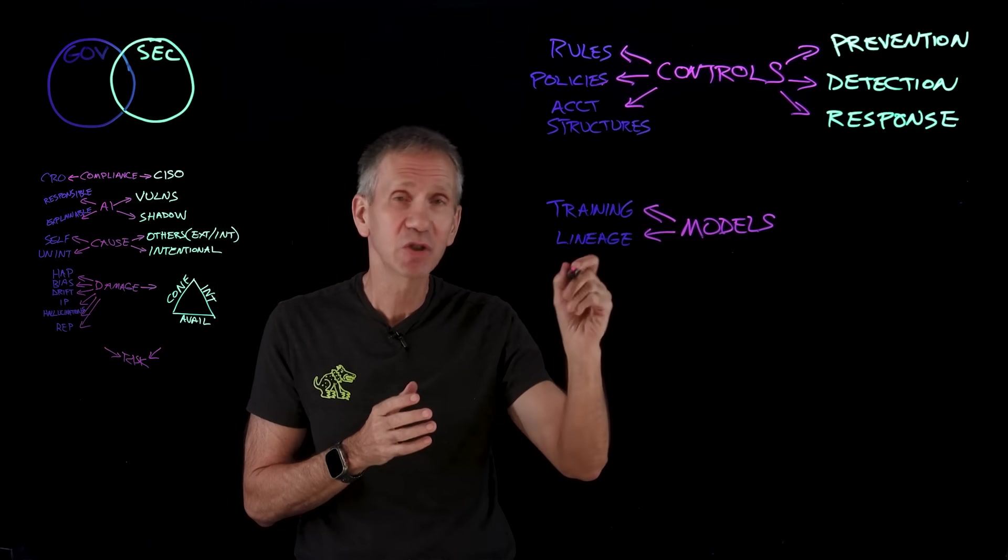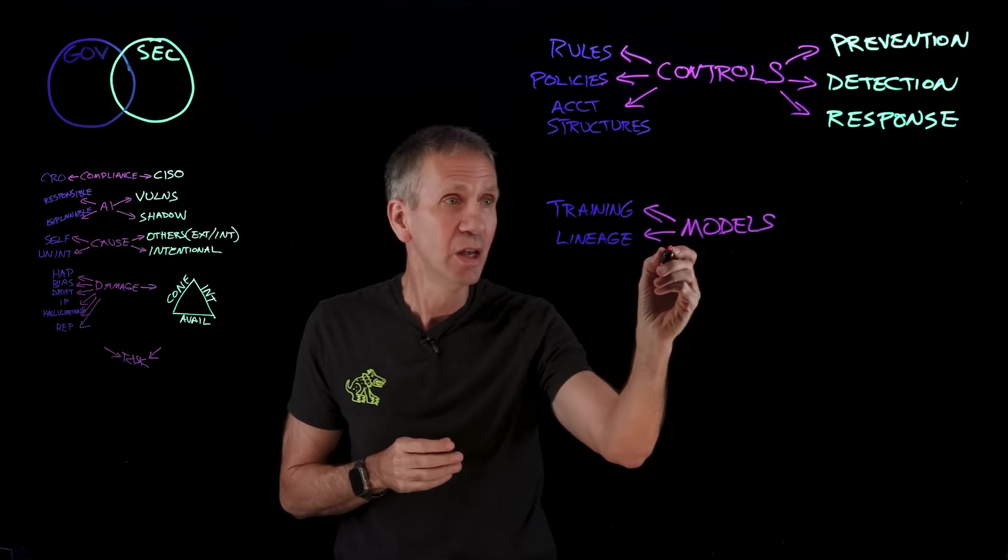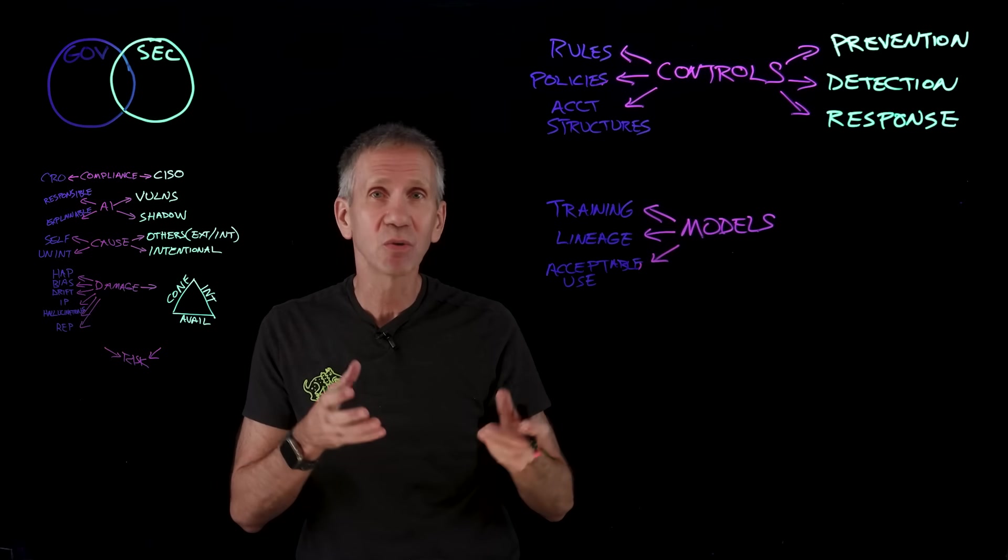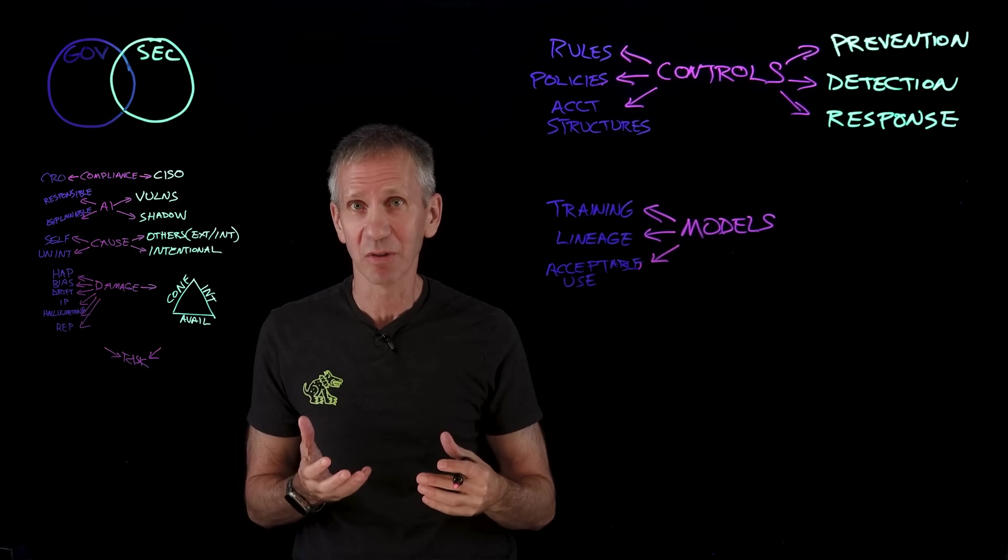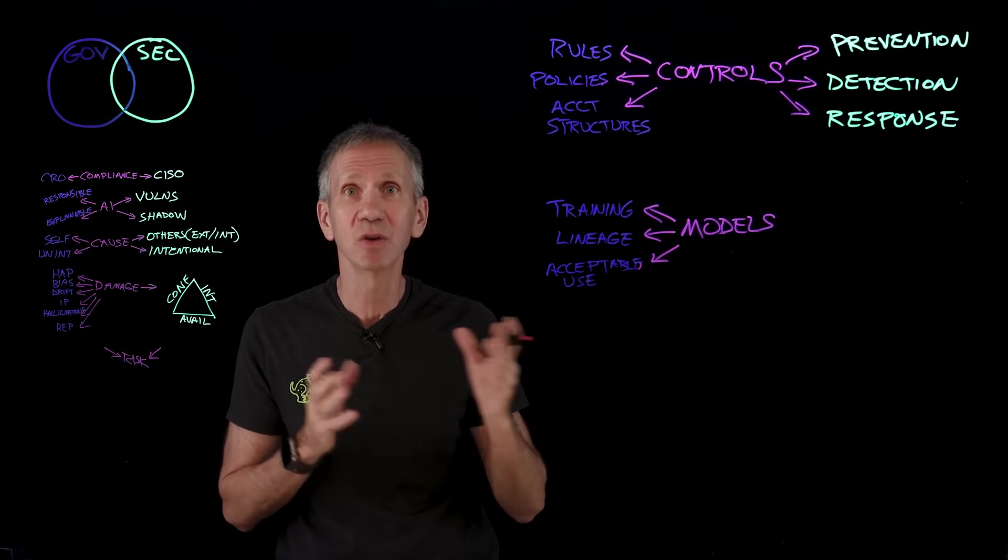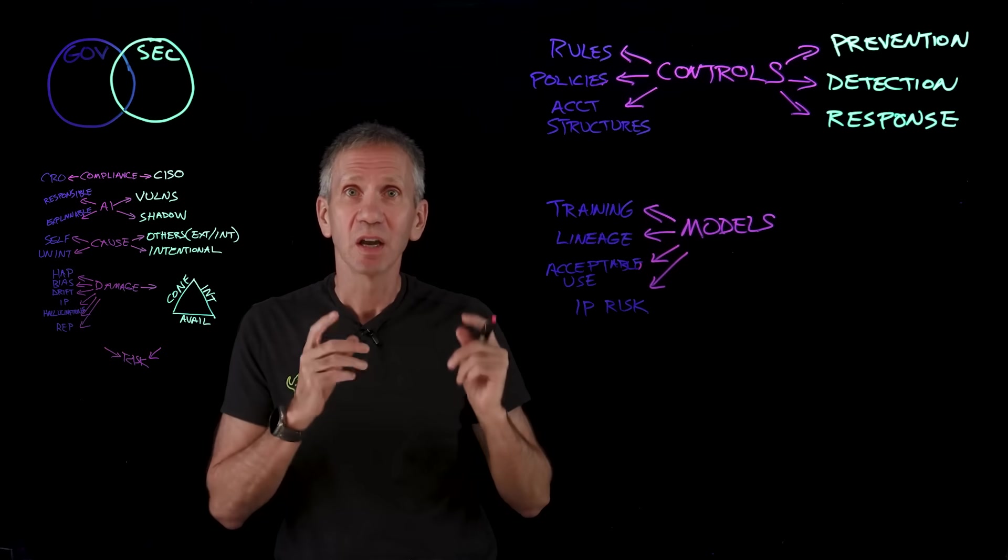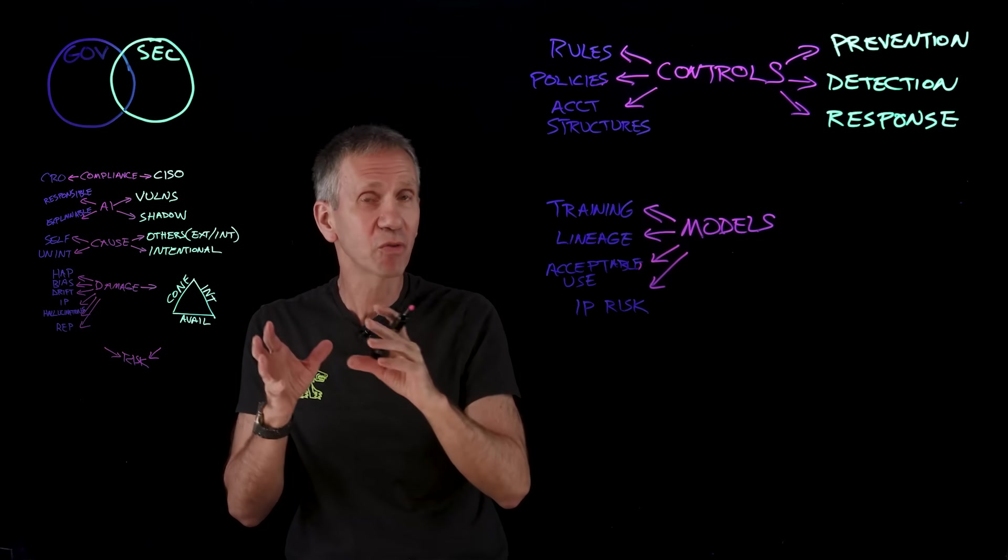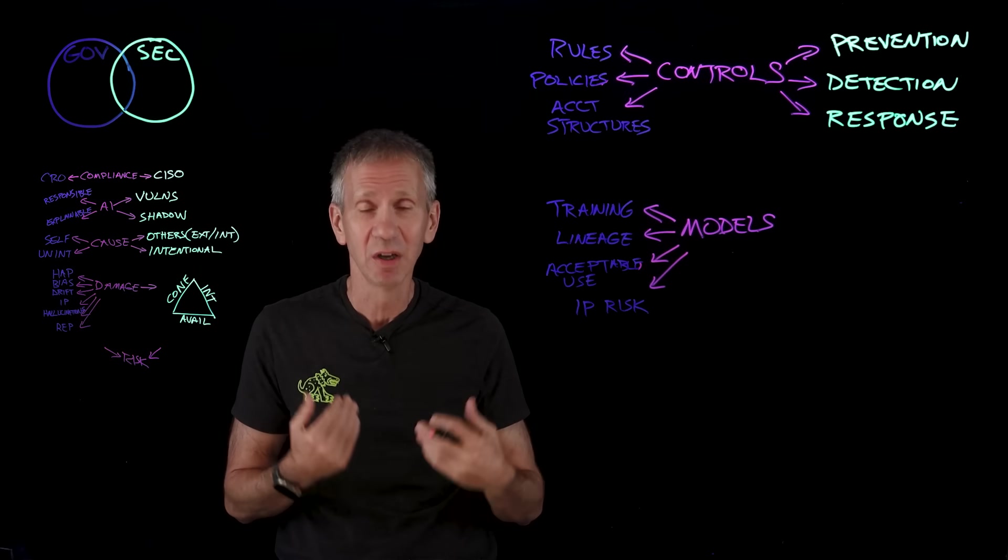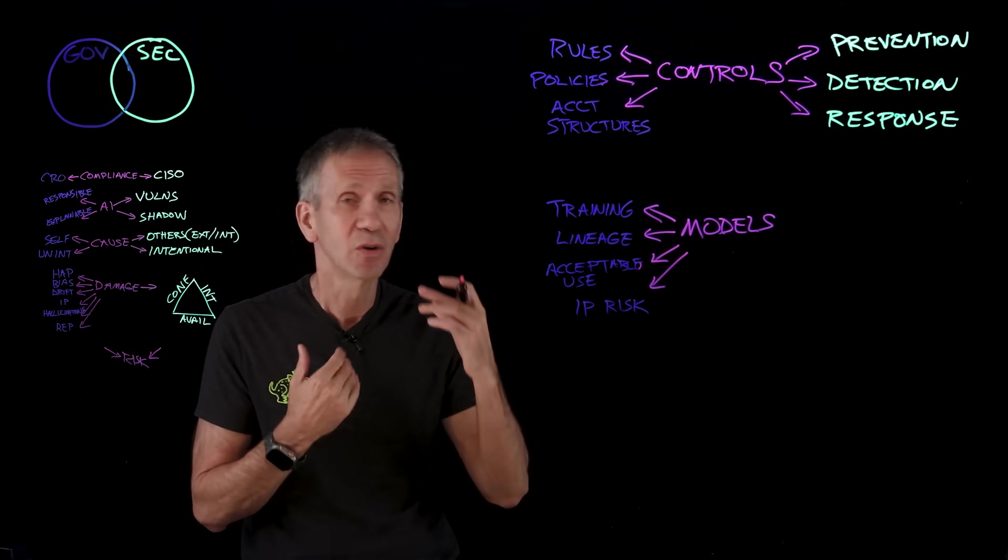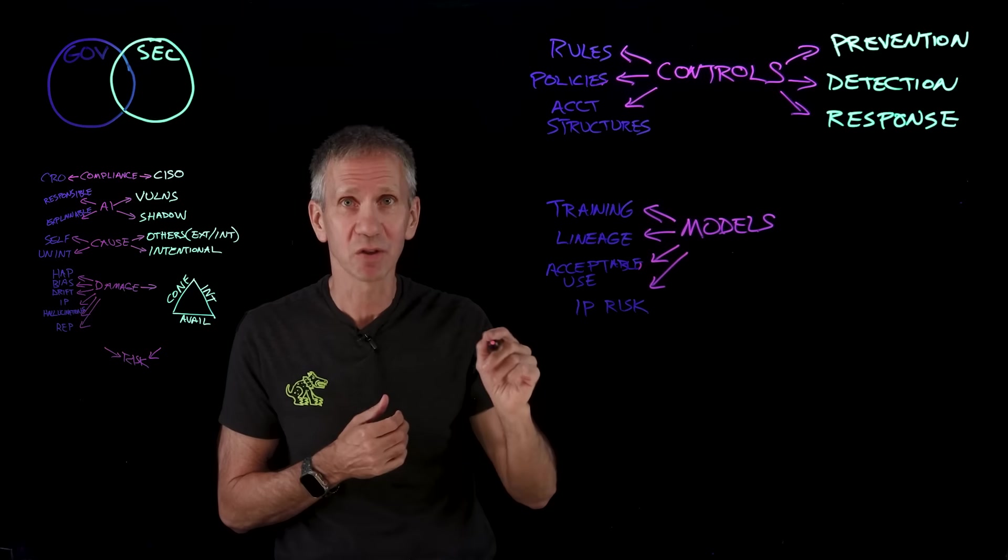If I go to an open source model repository, where did I get it? Do I have the latest and greatest and authentic version, or do I have some illicit copy that somebody's made, some bogus version of it? We need an acceptable use policy. What are the things that we're okay with our AI doing, and what are we not okay with it doing? And IP risk. We need to make sure that it's in fact our information that we have rights to.